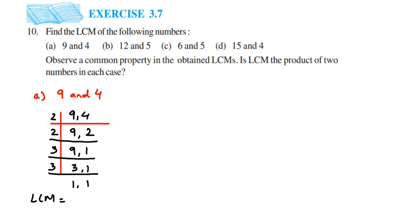To find the LCM, multiply all the prime numbers we used: 2×2=4, 4×3=12, 12×3=36. So the LCM of 9 and 4 is 36. Just multiply the prime factors you obtained — that's it. Now for the second question, we have 12 and 5.